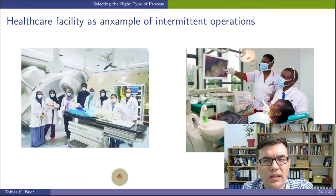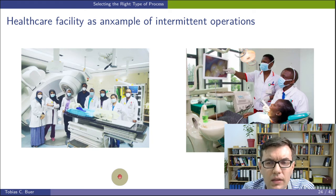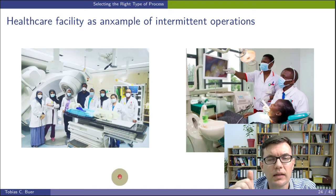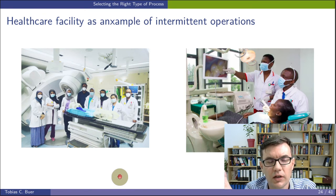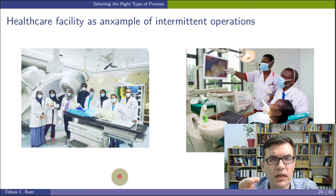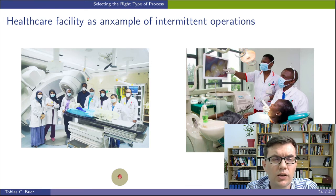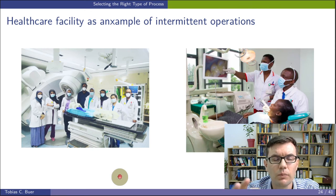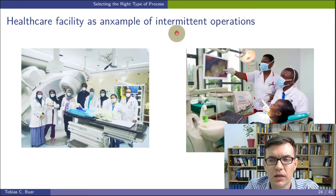Let's look at an example of intermittent operations: think of a healthcare facility, a hospital. You have many different departments — for example, dentist, surgery, emergency, pharmacy, radiology, and so on. A patient entering the hospital does not visit all the different departments. The patient is treated individually and only in those departments with the equipment really required to treat them. Usually you visit only one or two departments, and the majority of the others are completely out of reach for you. This is an example of an intermittent operation process.